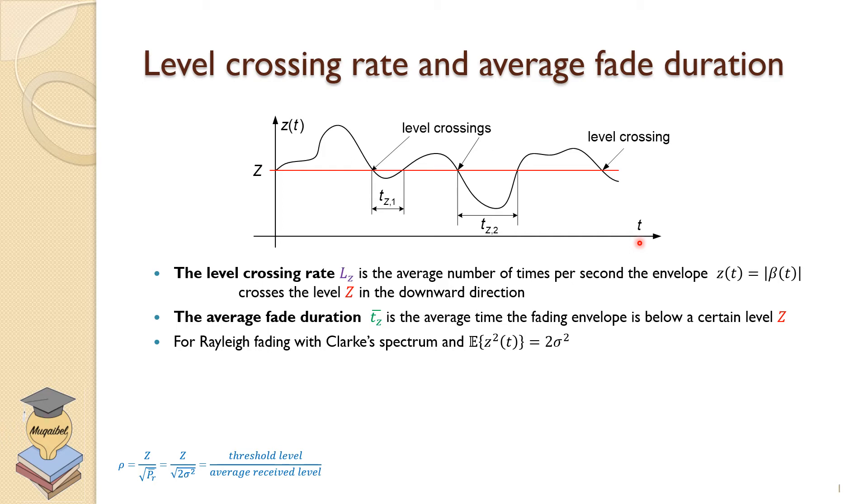So for Rayleigh fading with Clarke's spectrum, the expected value of Z of the bar signal is 2σ². This is the low pass equivalent.